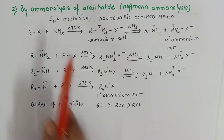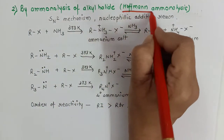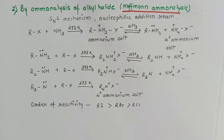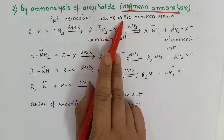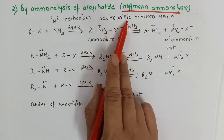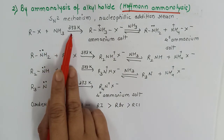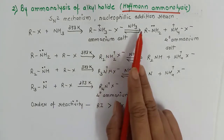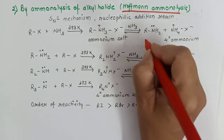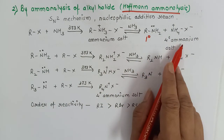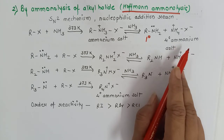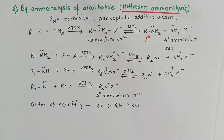The second method is ammonolysis of alkyl halides, also called Hoffman Ammonolysis — already studied under haloalkanes and haloarines. The reaction proceeds by SN2 mechanism and is a nucleophilic substitution reaction. Any alkyl halide treated with ammonia at 373 K first gives a substituted ammonium salt, which on further treatment with ammonia gives a primary aliphatic amine along with quaternary ammonium salt. The reaction then continues.